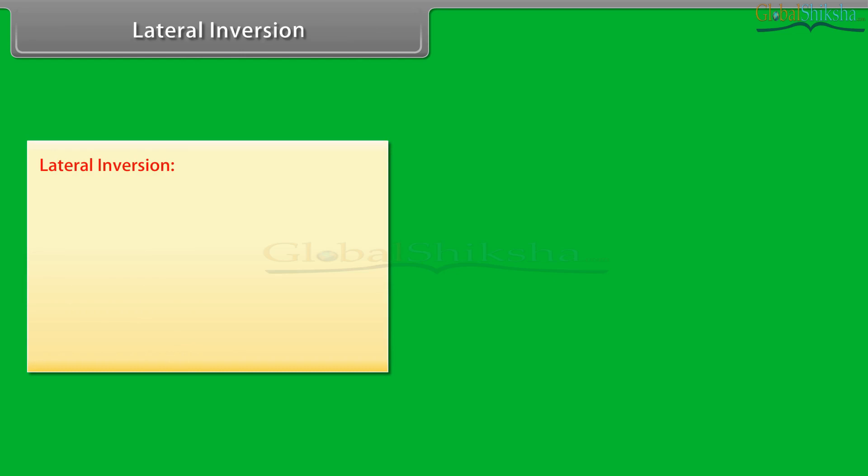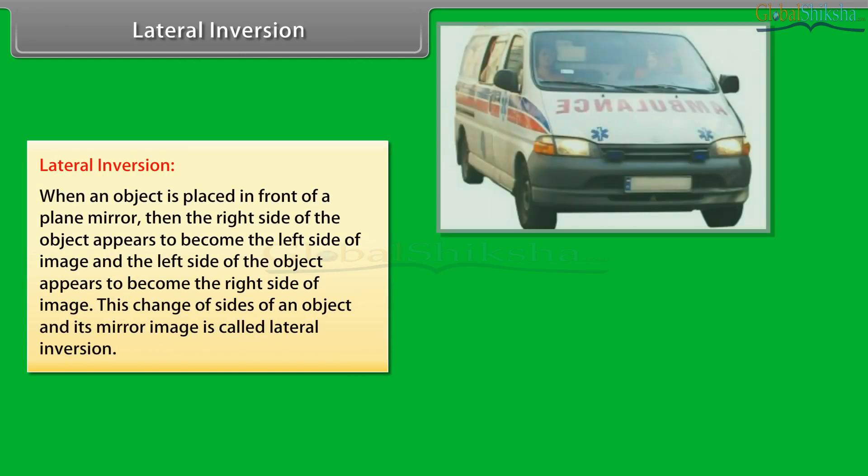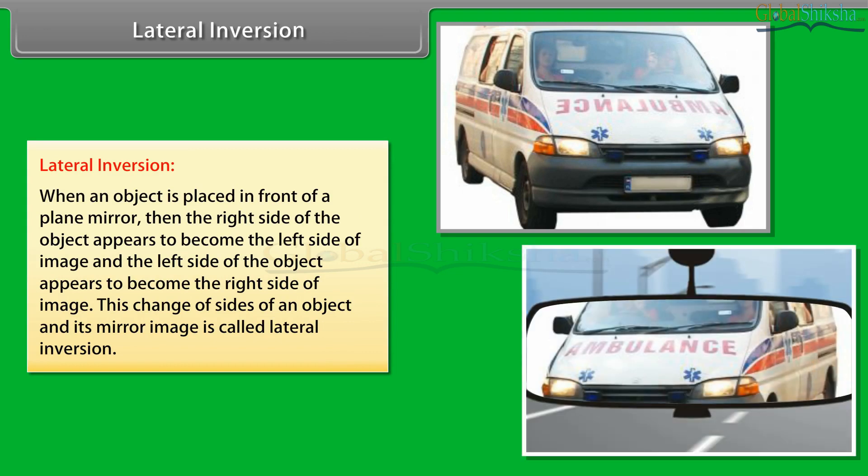Lateral inversion: When an object is placed in front of a plane mirror, then the right side of the object appears to become the left side of image, and the left side of the object appears to become the right side of image. This change of sides of an object and its mirror image is called lateral inversion.